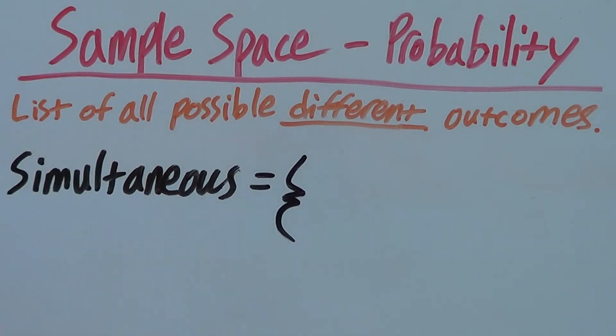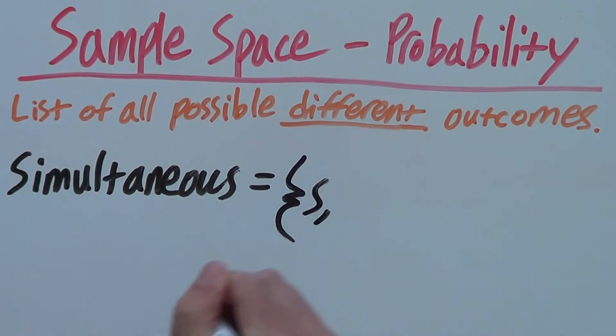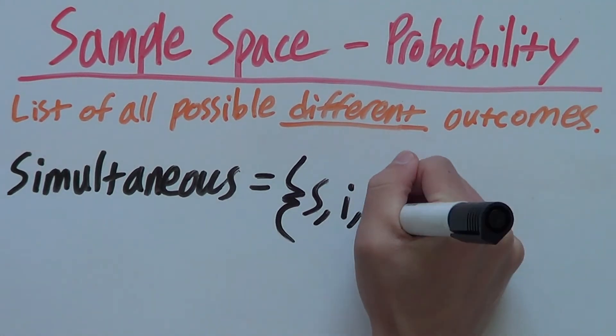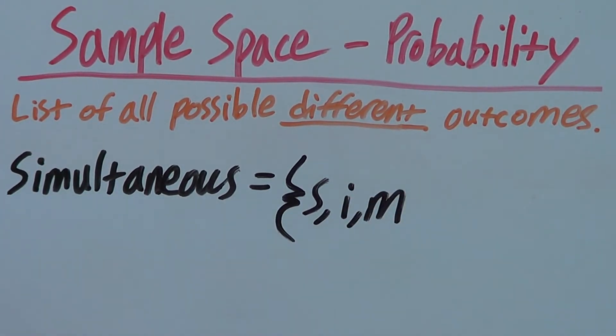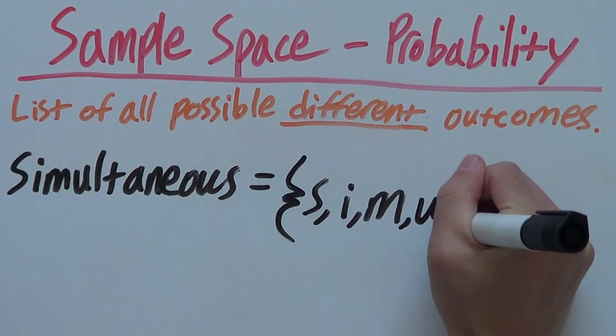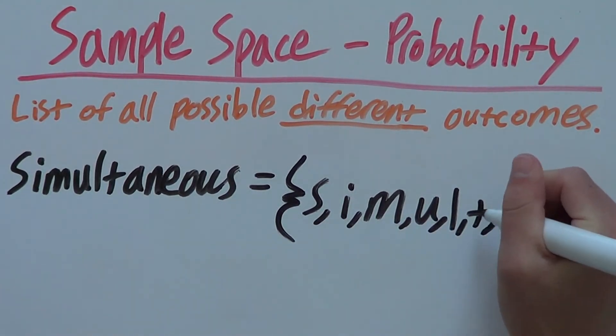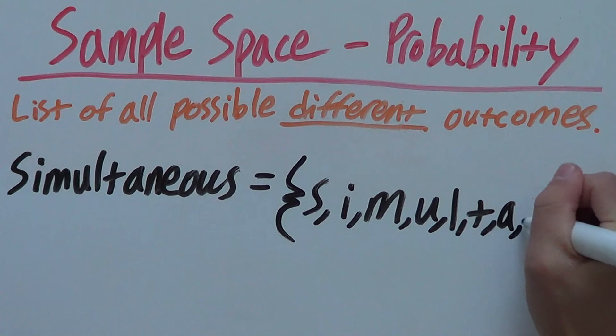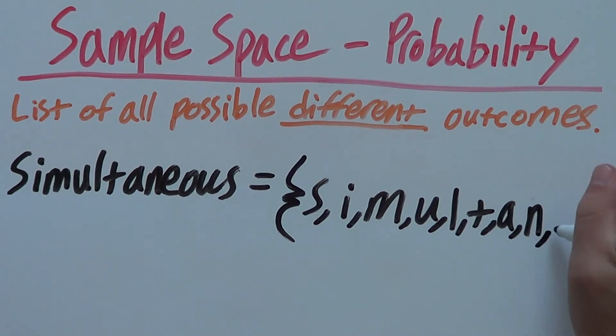Now we list all the possible different outcomes. So we have S, I, M, and they are separated by commas, U, L, T, A, N, and here's the tricky part, E, O.